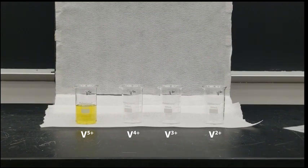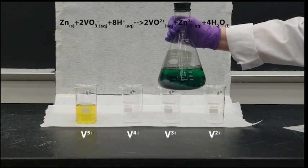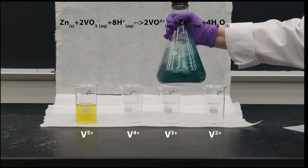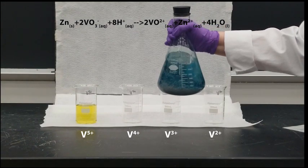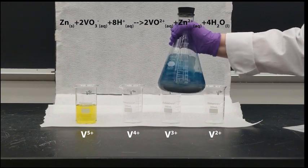The plus five oxidation state is yellow. I've added some vanadium to this flask and we're going to shake it to reduce it.